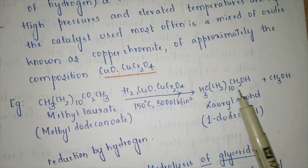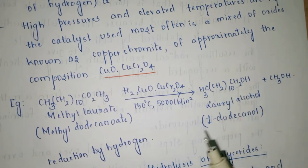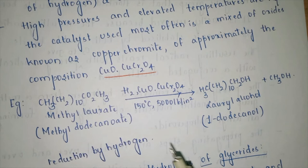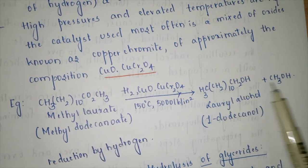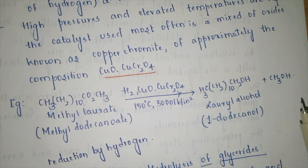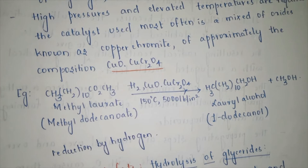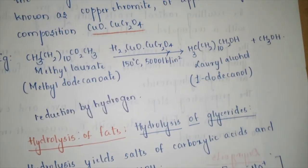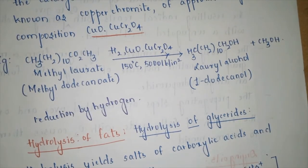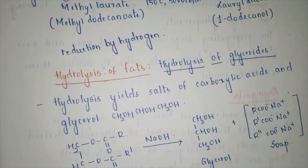In hydrogenolysis, we cleave the ester linkage by introducing hydrogen so that the two components are each converted to their respective alcoholic systems. Normally an ester is formed from a carboxylic acid reacting with an alcohol; here we introduce hydrogen so both parts become alcohols. This procedure is called hydrogenolysis, carried out in the presence of copper chromate — a difficult reaction requiring higher temperature and pressure.